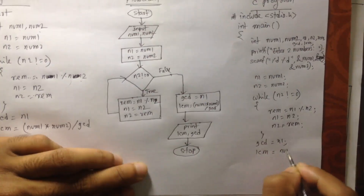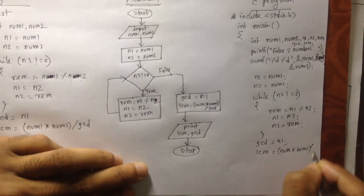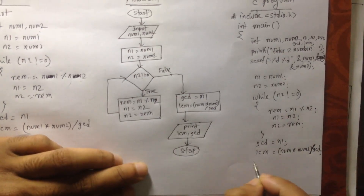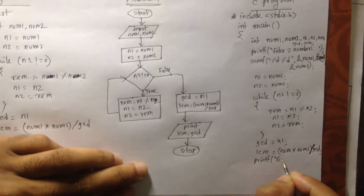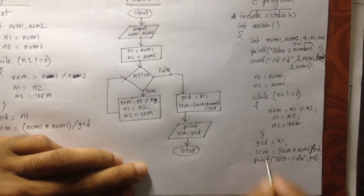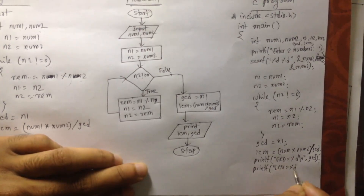We have SAM — number one into number two — we have to add, divided by gcd. Okay, that's what we have to do. Printf output: gcd is equal to percent d newline, gcd variable. Printf: lcm is equal to percent d newline, lcm variable.